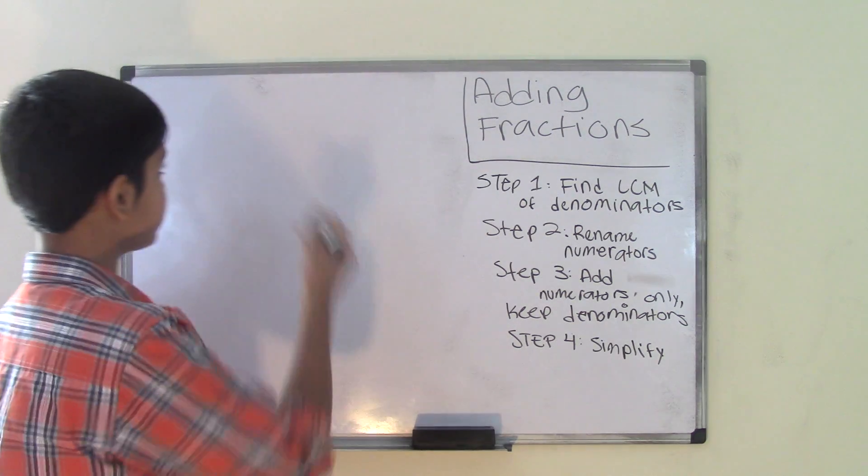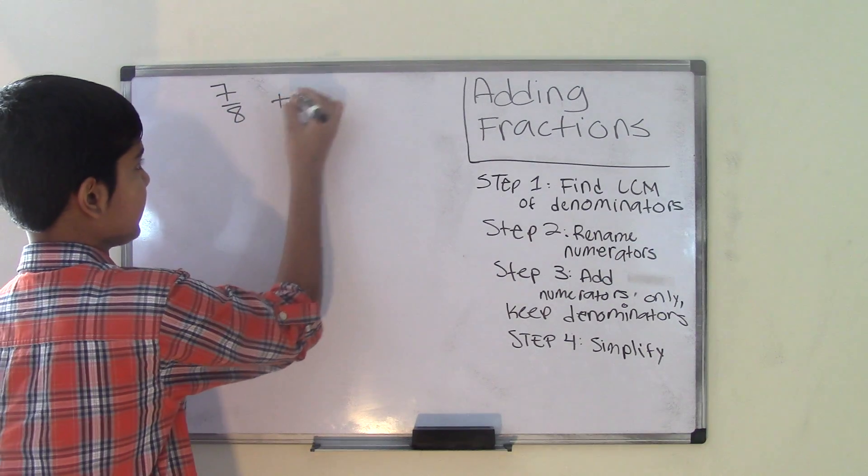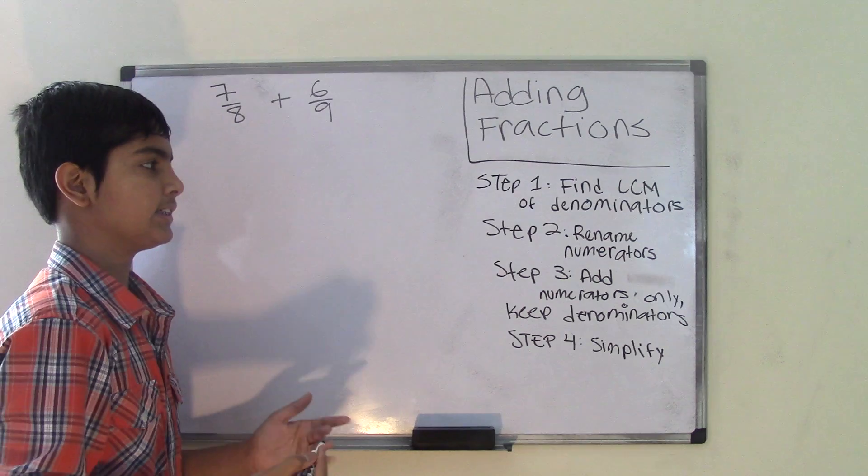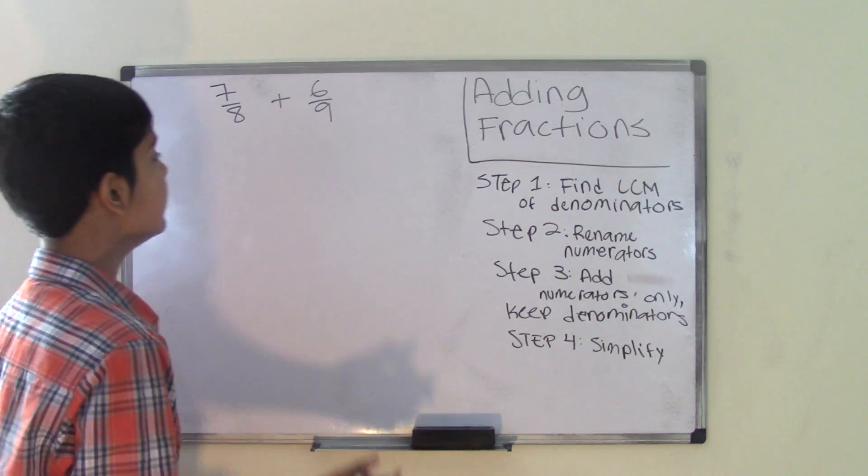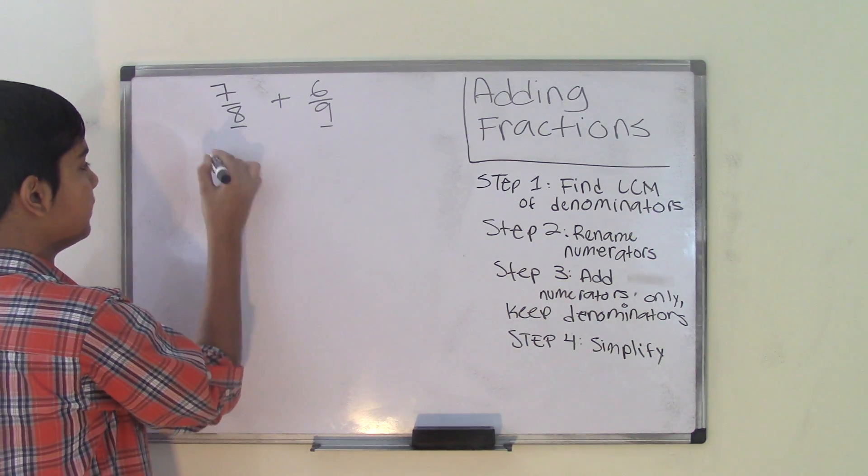Let's take the two fractions, 7 over 8, and we have to add that with 6 over 9. The first step in adding fractions is to find the LCM of the denominators. The two denominators are 8 and 9, so we have to find the LCM.